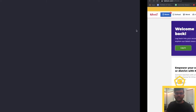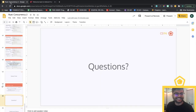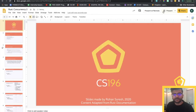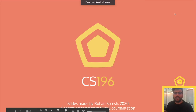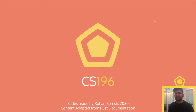Hey everyone, and welcome back to another exciting CS196 lecture. Let's get started. As always, if you have any questions, drop them into lecture questions on Discord or in the Twitch chat, and I will get to it as soon as I can. Today we're building off what we learned on Tuesday, when we introduced ourselves to the idea of concurrency and Rust. We're going to build off of that to learn more about how we can access data and manipulate it in ways that will better suit our purposes.